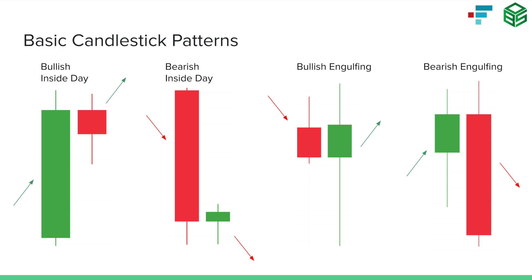A bullish engulfing bar signals a potential trend change. There was selling on day one and continued selling early in day two, but at some point a bunch of buyers stepped in and prices ended up increasing, so we'd most likely see prices continue higher. The opposite — a bearish engulfing candle — you'd most likely see at a top. Prices have been increasing until a bearish candle signifies a trend reversal, where price tried to break out over the previous day's high but was ultimately reversed even lower than the prior day's low, suggesting lower prices ahead.